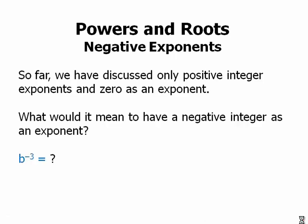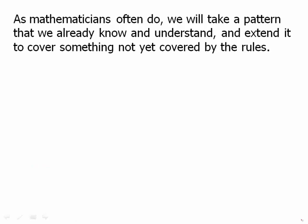We have to ask ourselves exactly what would this mean? What would it mean to have a negative integer as an exponent, like b to the negative 3? Well, as mathematicians often do, we will take a pattern that we already know and understand and extend it to cover something not yet covered by the rules. This is something that happens in mathematics over and over again.